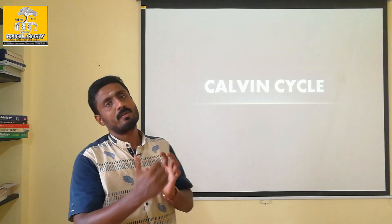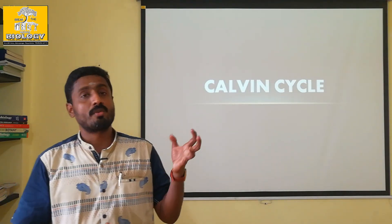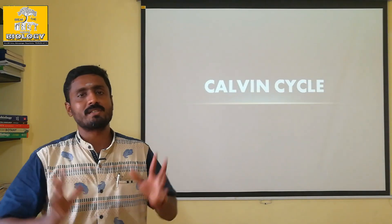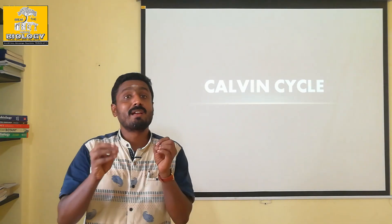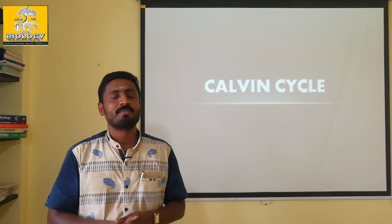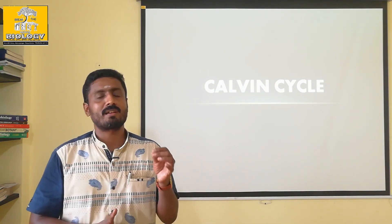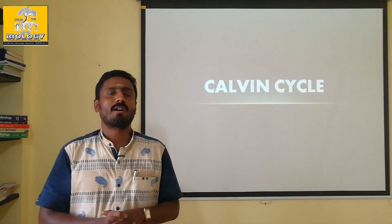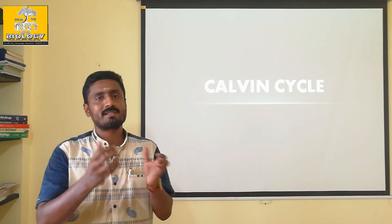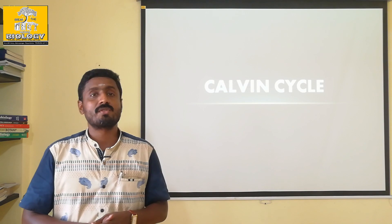This is the end product. The stroma has come from the stroma. In the description, you can see non-cyclic photophosphorylation and cyclic photophosphorylation, and how ATP and NADPH2 are produced.